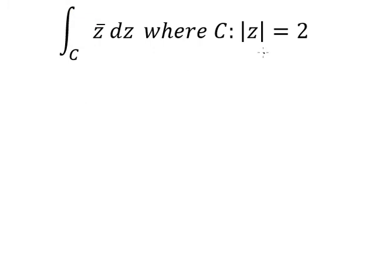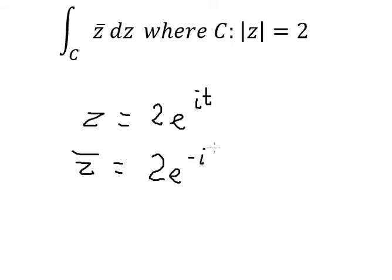In this situation we have the absolute value of z equals 2. So we have z equal to 2e to the power of it. Z bar we can change into 2e to the power of negative it.